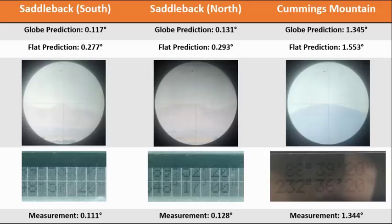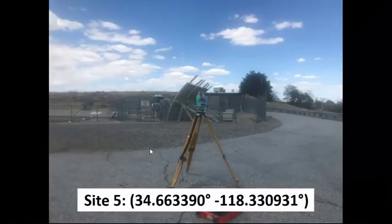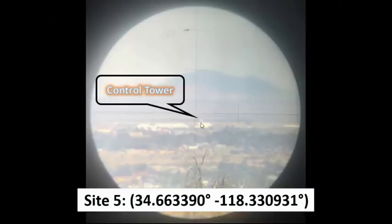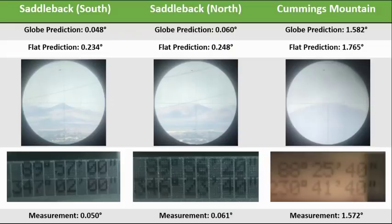Site number five and the last site. This was quite a drive, actually. And I was quite a long way from the control tower, about 24 kilometers, I think. So it was quite difficult to see through the theodolite. So I actually used Cummings Mountain as a reference point and then swung my theodolite around to where the control tower should be in order to find it. So I thought that was interesting as well. So there's the control tower there, which I would struggle to see if I didn't have help knowing where it was. So here again, here are the predictions on both models, the globe prediction and the flat prediction and the measurements. And obviously, once again, they are incredibly close to the globe predictions.